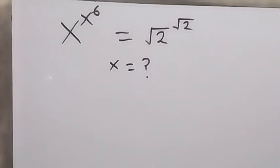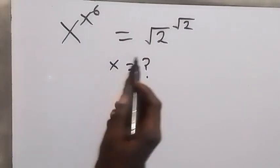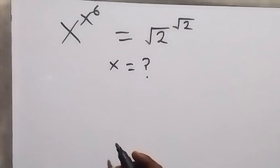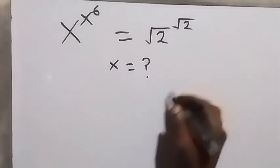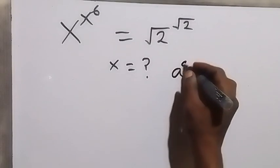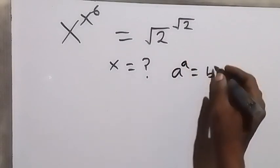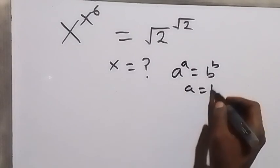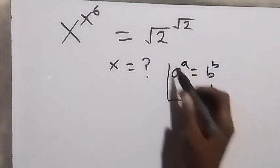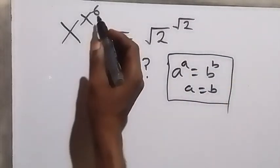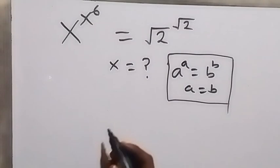Hello, you are welcome. How to solve this problem: x raised to power x raised to power 6, equals root 2 raised to power root 2. From here we want to arrive at something — when we have a raised to power a equals b raised to power b, we understand that a will be equal to b.